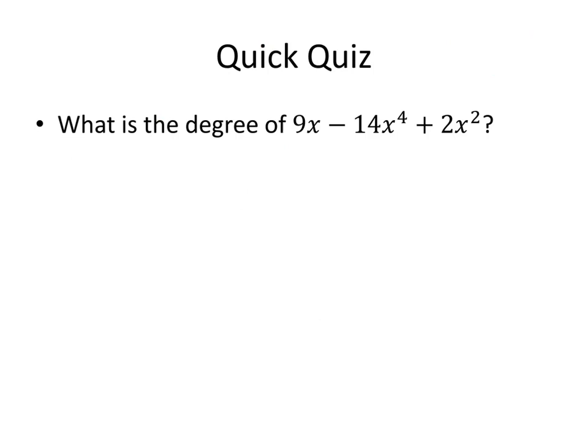Normally we write polynomials from the highest power of x down to the lowest power of x, but it doesn't have to be written that way. So remember that the degree is always the highest power of x, which in this case is 4.